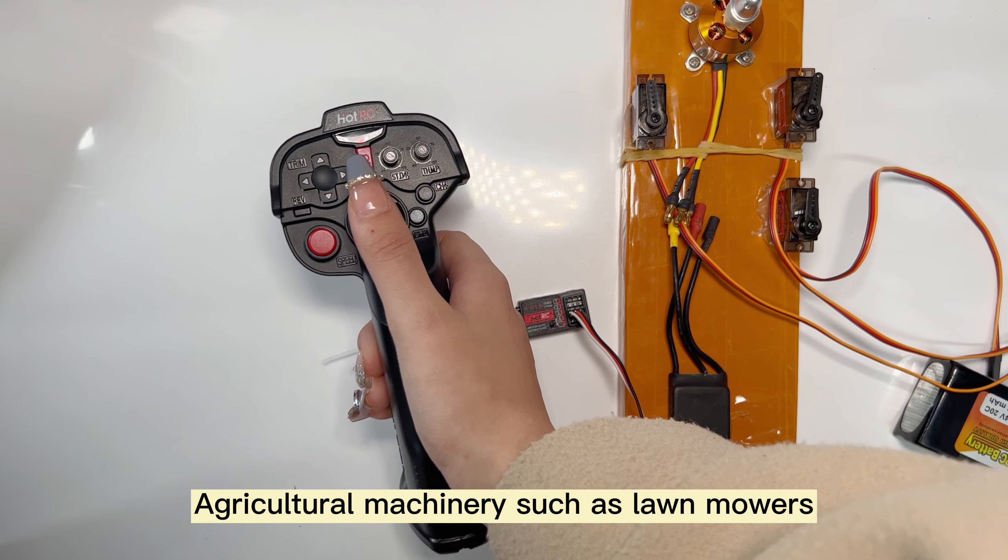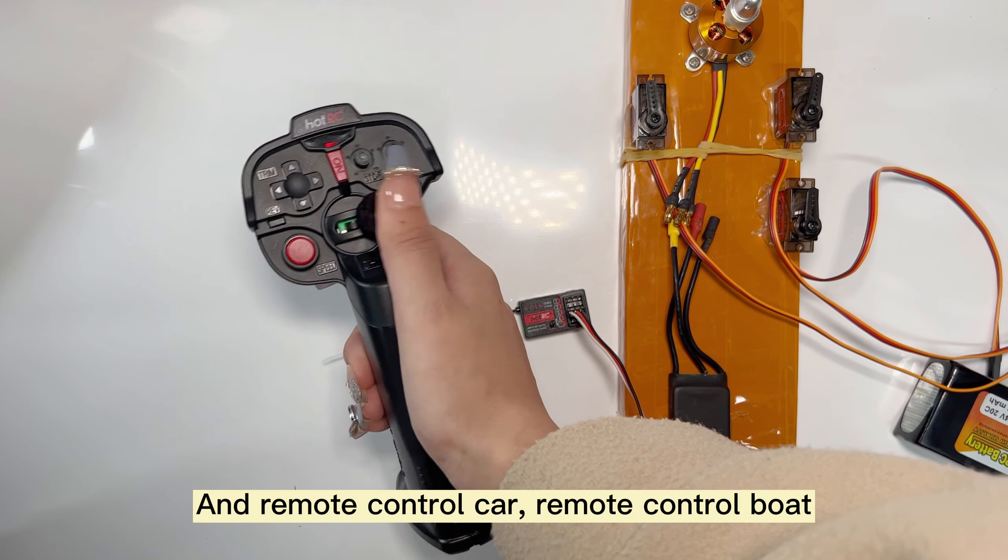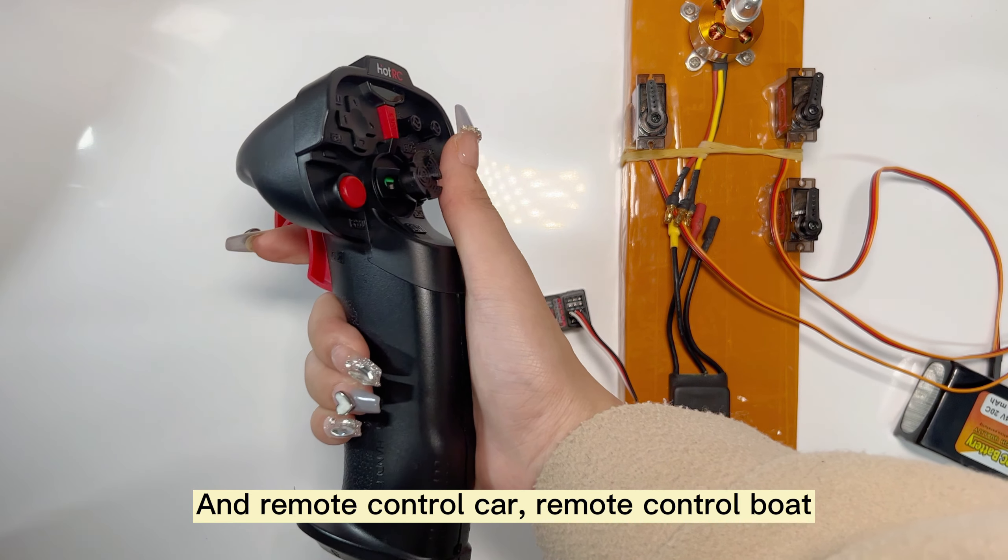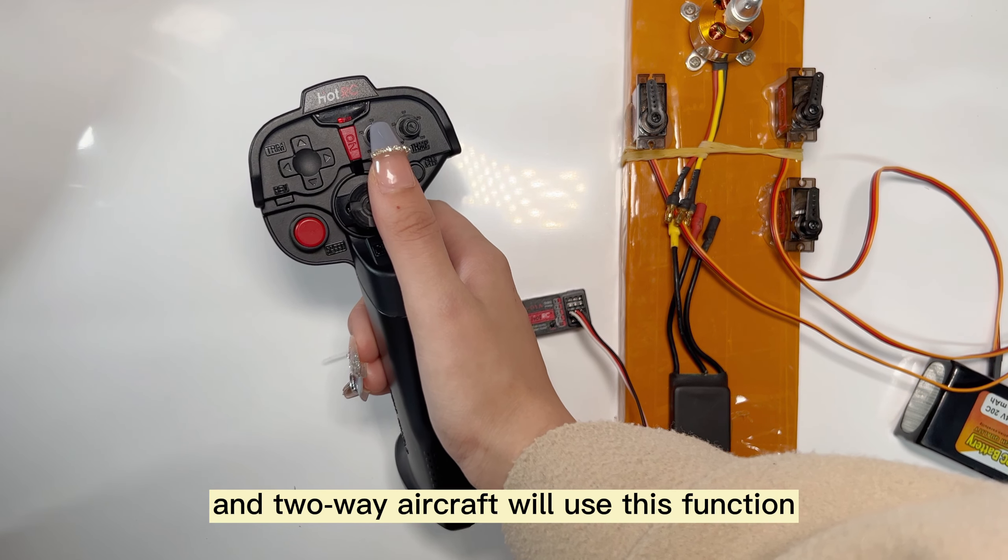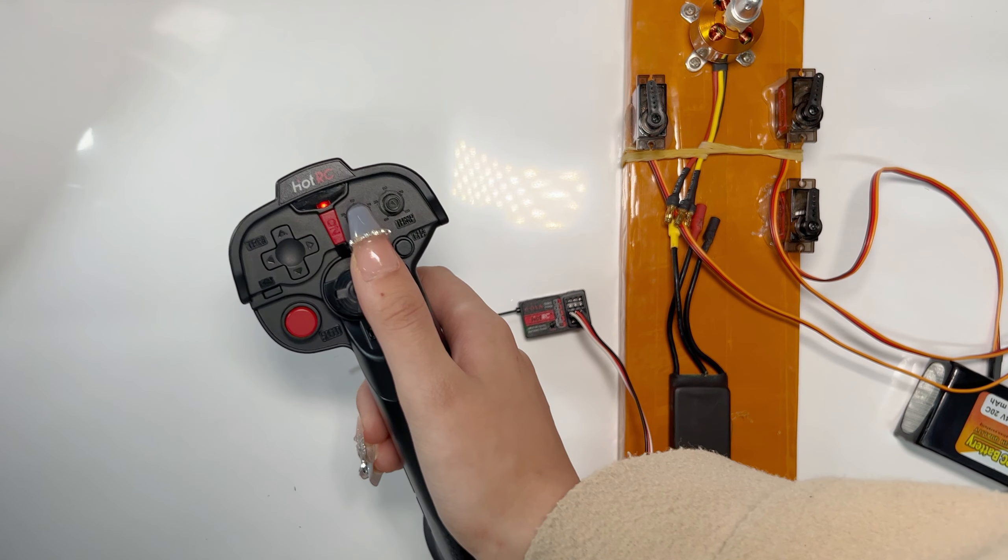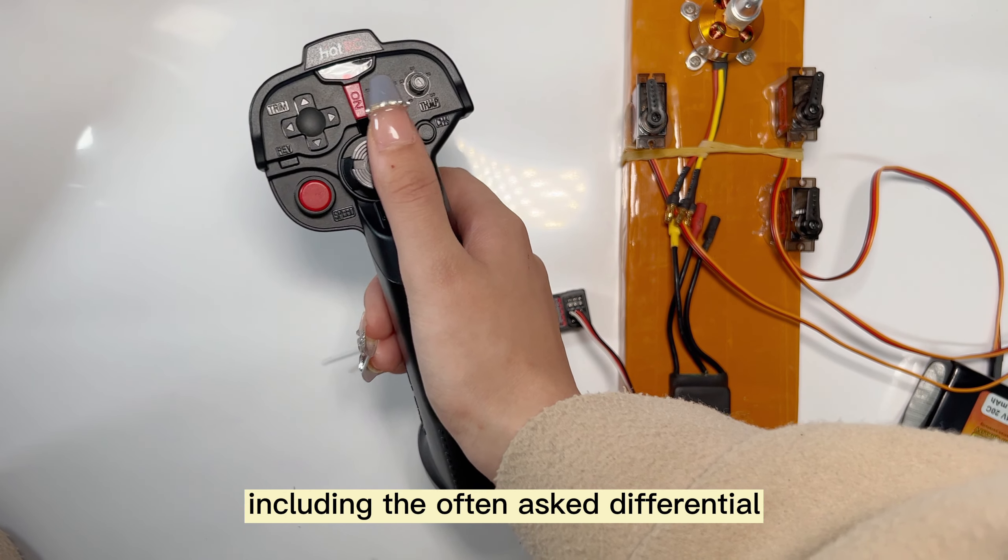Agricultural machinery such as lawnmowers, remote control cars, boats, tanks, and two-way aircraft all use this function, including the often-asked differential.